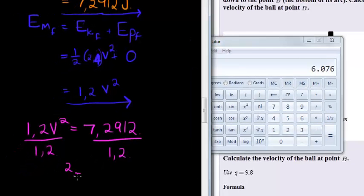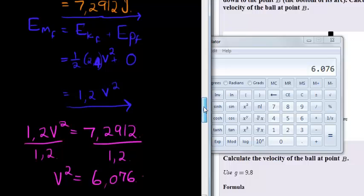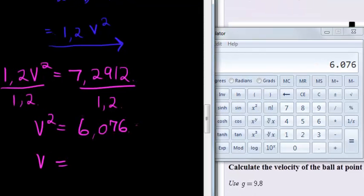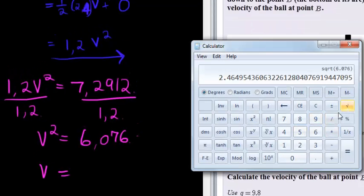And I get the velocity squared is equal to 6.076. But I'm not looking for velocity squared, I'm looking for velocity. So I take the square root of this giving me 2.46.